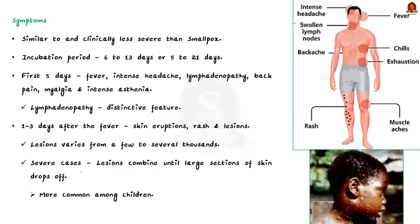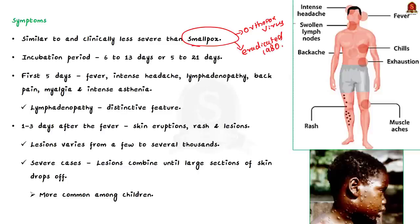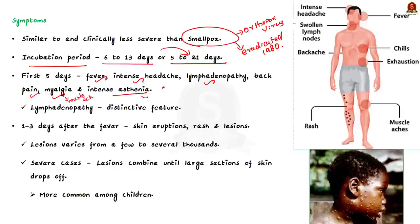The symptoms of monkeypox are very similar to those of smallpox, which is also an orthopoxvirus and was eradicated in the 1980s. Monkeypox is clinically less severe than smallpox. The incubation period is usually 6 to 13 days but can range from 5 to 21 days. For the first 5 days, symptoms include fever, intense headache, lymphadenopathy, back pain, myalgia (muscle aches), and intense asthenia (lack of energy). Lymphadenopathy — swelling of lymph nodes — is a distinct feature of monkeypox among orthopoxviruses. Within 1 to 3 days after fever onset, skin eruptions, rash, and lesions begin to appear. The number of lesions can vary from a few to several thousands.